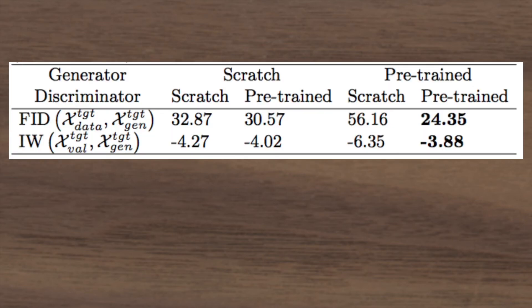So this table right here shows they test training the generator only from scratch or just pre-training the generator, and then they do the inverse—testing pre-training only on the discriminator versus training from scratch. And then surprisingly they find that pre-training works, and if you're going to only do one or the other, it works better on the discriminator. But in all cases it actually does work best to transfer with both the generator and discriminator.